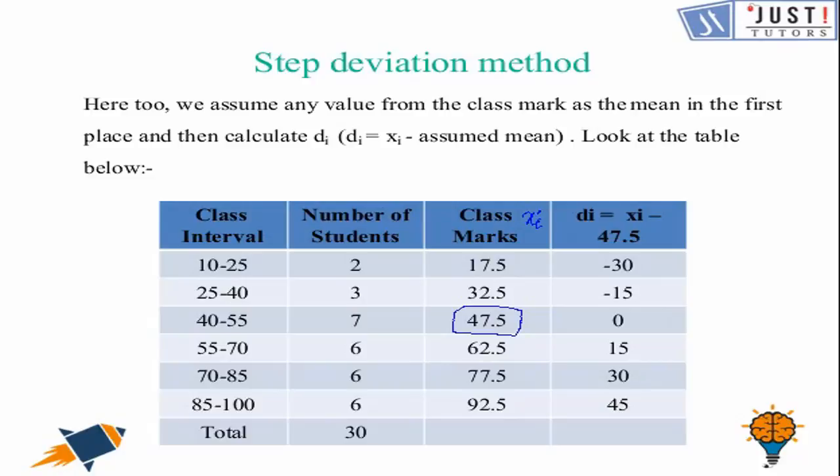Now we will be finding di which is equal to xi's minus assumed mean. That's going to be minus 30, minus 15, 0, 15, 30 and 45.